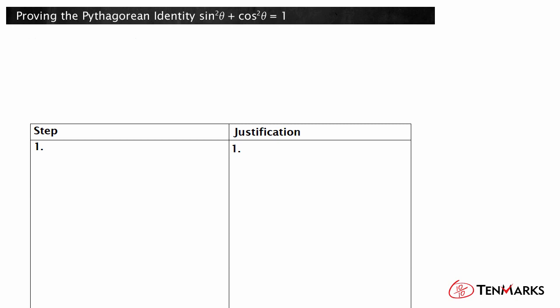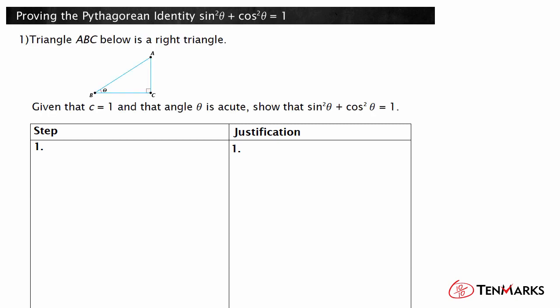Let's take a look at an example. Triangle ABC below is a right triangle. Given that c equals 1 and that angle theta is acute, show that sine squared theta plus cosine squared theta equals 1.